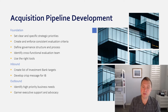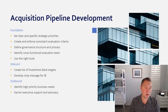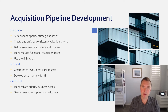Once you have thought through your origination allocation strategy — how you'd like to target both inbound and outbound and what percentage of your overall pipeline each represents — you're going to want to consider the five main foundational core concepts to building a pipeline. The first is that you start with a set of specific strategic priorities.